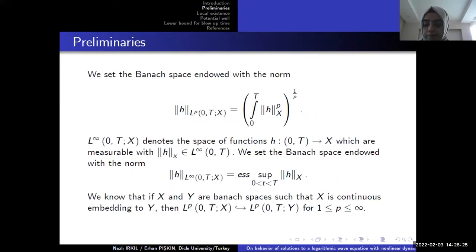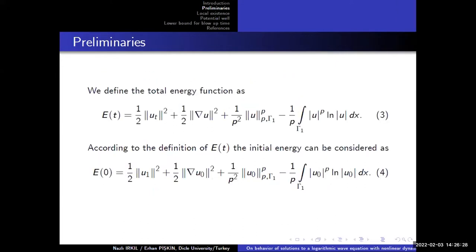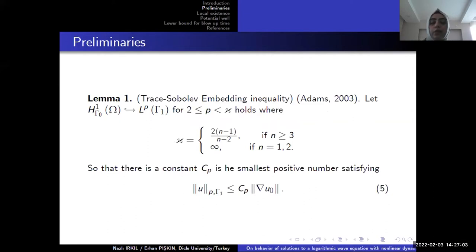Then we define the total energy of functions. It is very important for us. You can see our total energy function related with problem one. We are given E equals. According to the definition of total energy, the initial energy for T equal to zero can be considered as E0 equals. Then we will give some lemmas which will be used in our proofs.